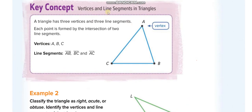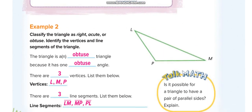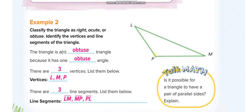Now, vertices and line segments. Where two line segments meet, that point is called a vertex. This triangle has three vertices: A, B, and C, and three line segments: AB, BC, and AC. All triangles have three vertices and three line segments.